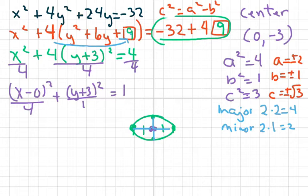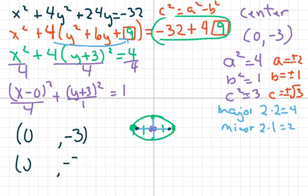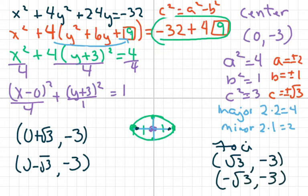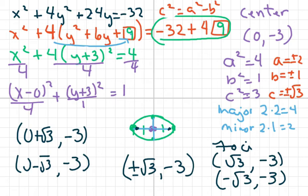√3 is very close to 2, so I put the foci really close to the endpoints — doesn't have to be perfect. I write my center down and add ±√3 to the x-coordinate. So the foci are (√3, −3) and (−√3, −3), or written as (±√3, −3). And that's all — have a nice day! The next thing we'll be going over is hyperbolas. Take care, bye!